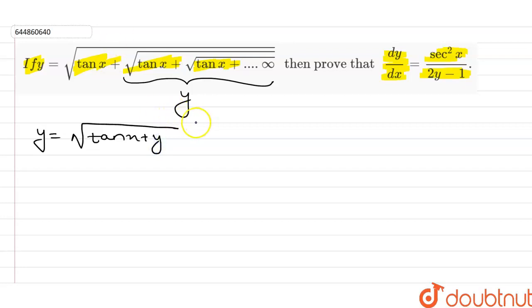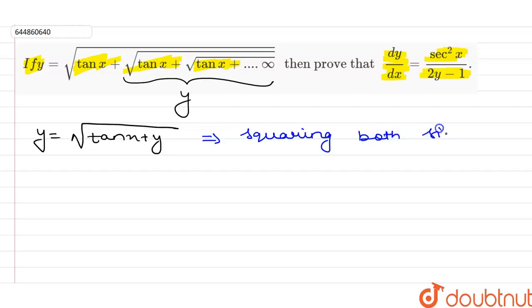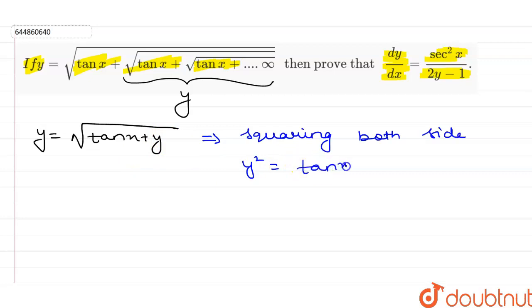Now I have to square both sides. On squaring both sides, on the left side I write y², and on the right-hand side the square and square root cancel, so the remaining part is tan x plus y. So we have y² = tan x + y.